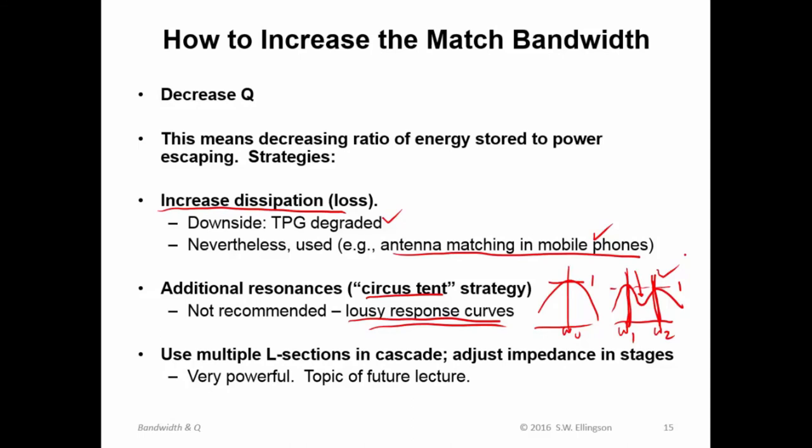A far more effective way to do this, to increase the bandwidth of a match, is to use multiple L sections in cascade and to adjust the impedance a little bit at a time. So instead of going immediately from one impedance to another impedance, you might have more than one matching section and you gradually increase the impedance. And we will certainly investigate that idea. That's a topic of a future lecture. So I'll lay that idea on you now and we'll revisit in a future lecture.